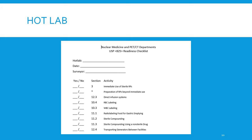Here is a nuclear medicine and PET department USP 825 readiness checklist. You can fill this out or get something similar. There's a yes and no column, a section, and the activity. What I'd recommend is going through and seeing first: do you use immediate use sterile radiopharmaceuticals? Yes or no. Preparation of radiopharmaceuticals beyond immediate use — do you do anything beyond immediate use? Yes or no.